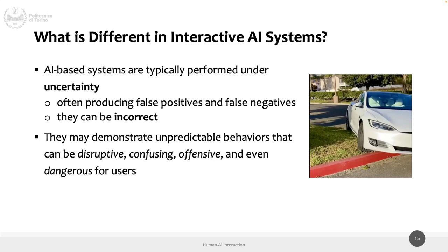I remember the first version of ChatGPT — if you asked which color was the white horse of Napoleon, it would say it doesn't know, even though you say 'white horse' in the question. Now you get the right answer: white. There could be upgrades and things that change, but there can be this uncertainty and incorrectness intrinsic to a specific moment in time in an AI system. And this unpredictable behavior can be something to laugh at, or something dangerous, like in medical settings.